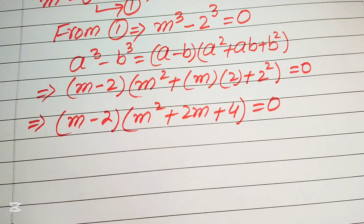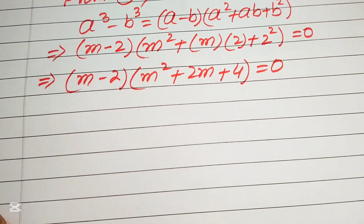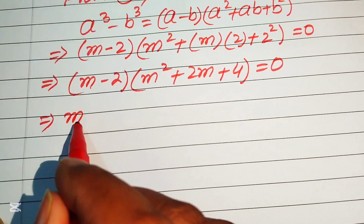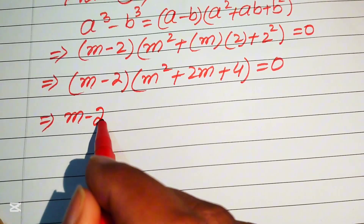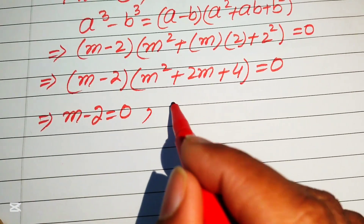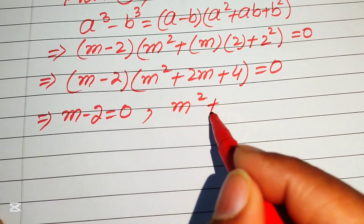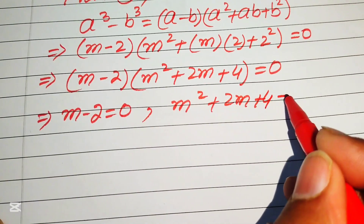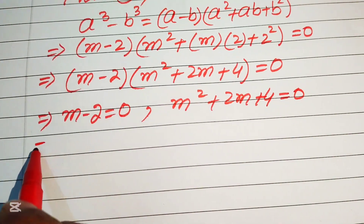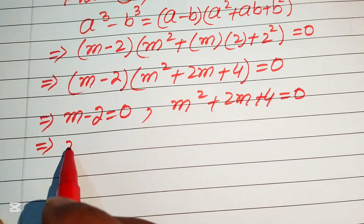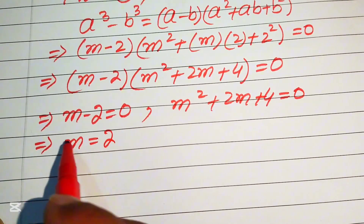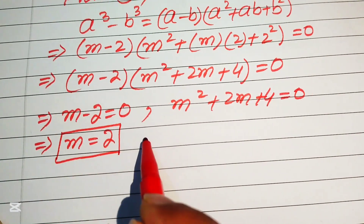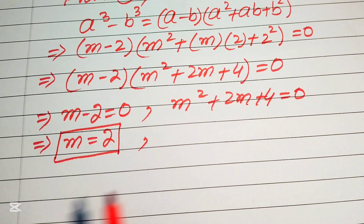We now split into two sub-cases. From the first case, m minus 2 equals 0, giving m equals 2 — the first root. From the second case, m² plus 2m plus 4 equals 0, which is a quadratic equation we need to solve for the other roots.